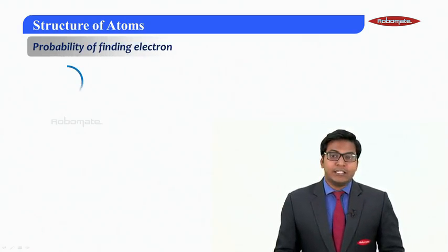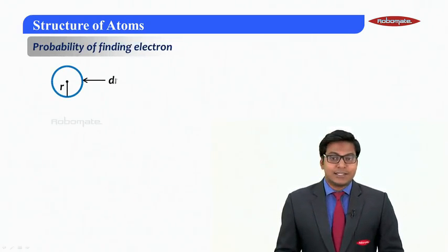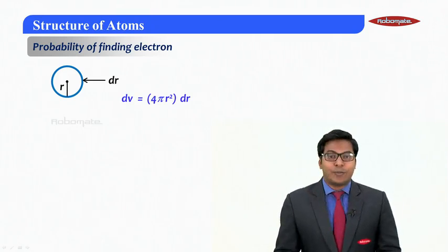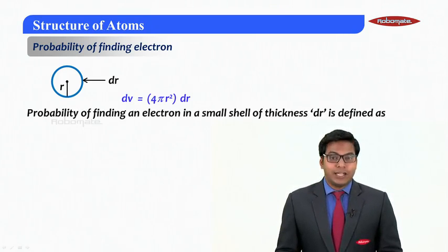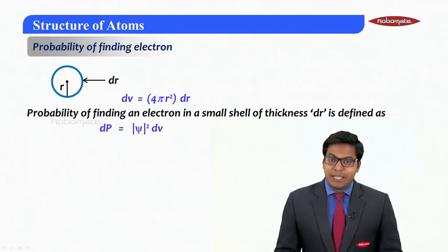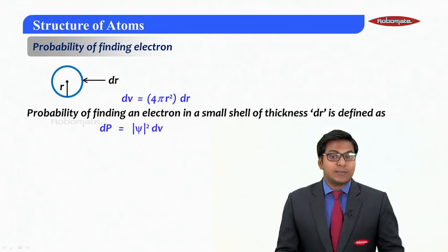Earlier we discussed how to calculate the total probability. For which we took a shell at a distance r with thickness dr, and we can calculate the volume of it which is 4πr² into dr, and probability of finding electron in that small thickness dr.